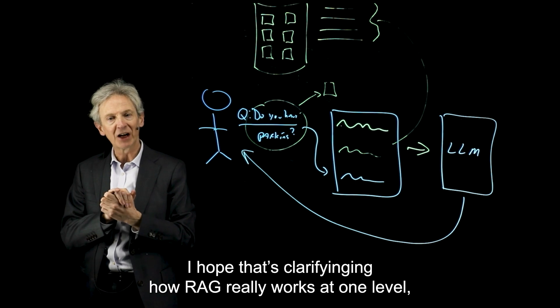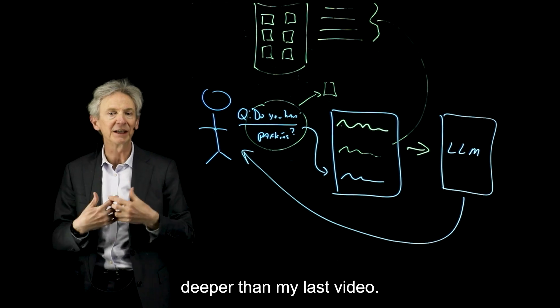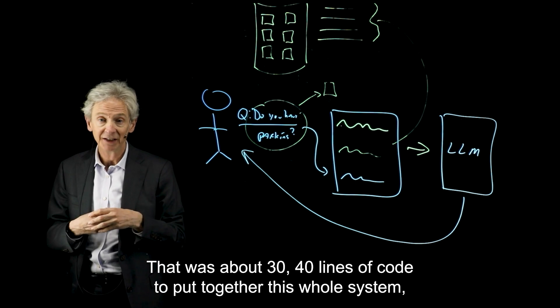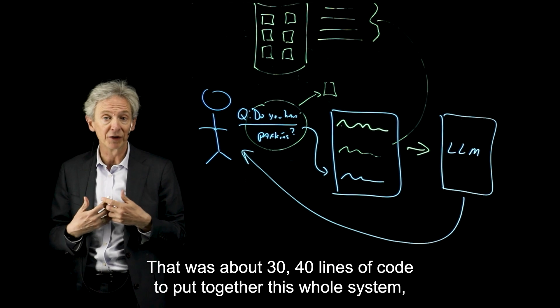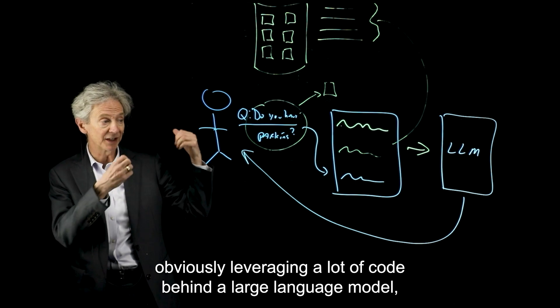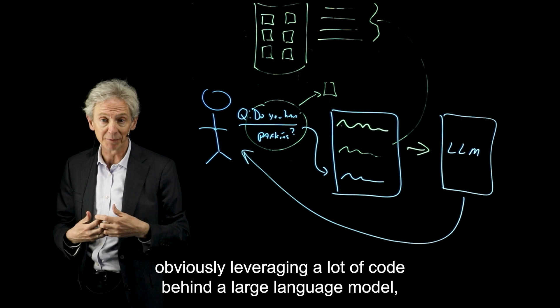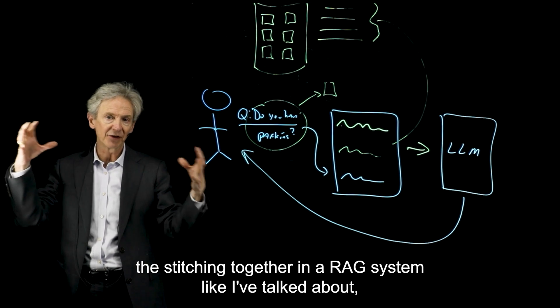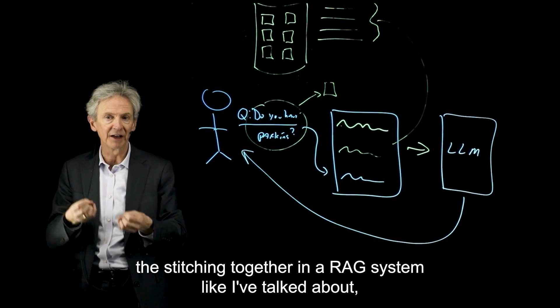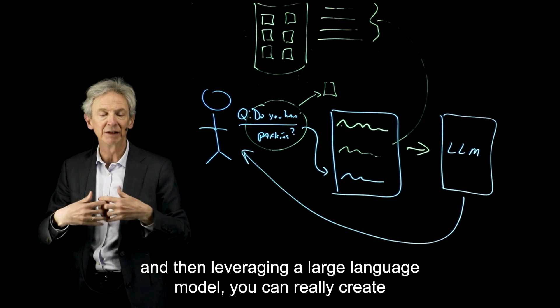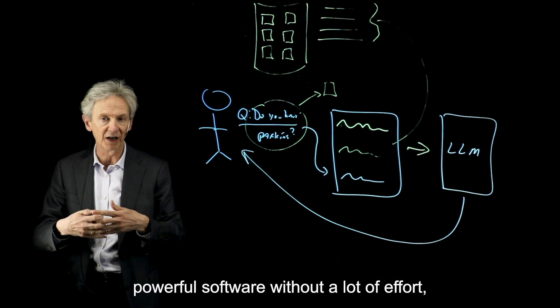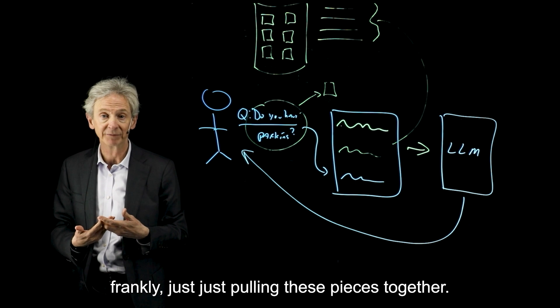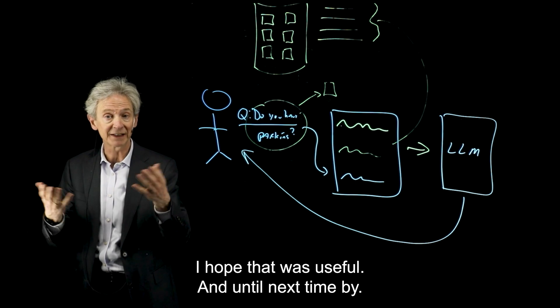Okay, that was it. I hope that clarified how RAG really works at one level deeper than my last video. You can see it in code there and it's not that complicated. That was about 30, 40 lines of code to put together this whole system. Obviously leveraging a lot of code behind a large language model. But just putting together your content, the stitching together in a RAG system, and then leveraging a large language model, you can really create powerful software without a lot of effort, frankly, just pulling these pieces together. So that was it. Hope that was useful and until next time, bye.